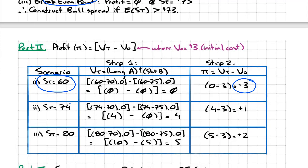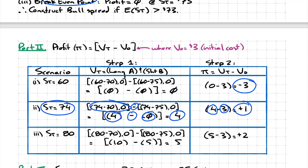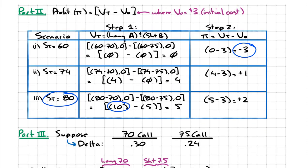What if the spot price at expiry is 74? The intrinsic value for call A would be four. Call B with a strike of 75 would be out of the money, so the combined position is worth four. Profit: I ended up with four but paid three, so my profit is $1. And finally, if the spot price is 80: intrinsic value for the long position is 10, intrinsic value for the short position is 5, so the terminal value is 5. Subtract what you paid — $3 — and you walk away with a $2 profit.